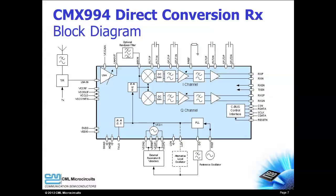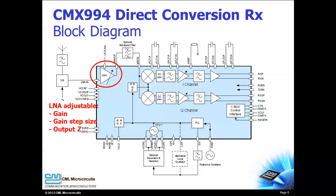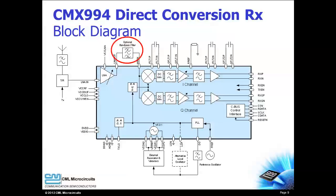Let's review the CMX994 block diagram to better understand how it can serve in your design. The integrated LNA has adjustable gain, gain step size, and output impedance. The LNA can be bypassed if desired. An external bandpass filter may be used if desired for your application.